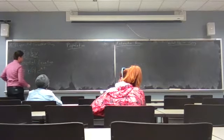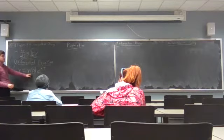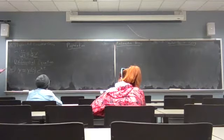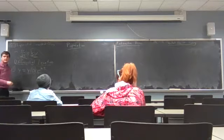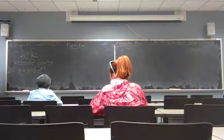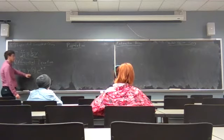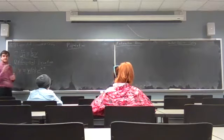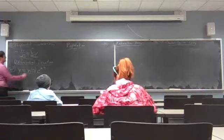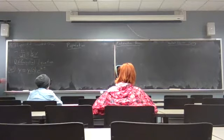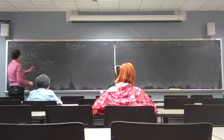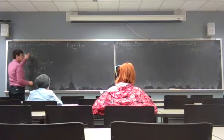Depending on whatever your initial condition might be — basically your starting point — that's going to change the equation. So let's say at time zero my population is 100. Then I would put 100 in this spot. Or 1,000, 2,000 — whatever that starting point is, that's the number I put here. And k will also vary, giving us this different class of solutions.